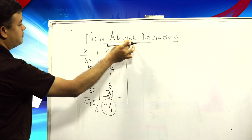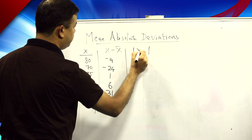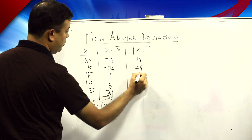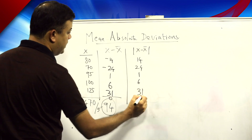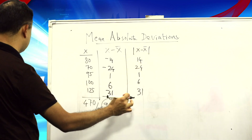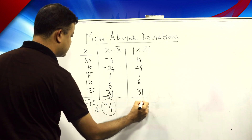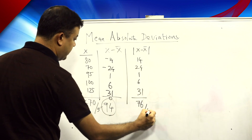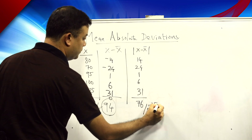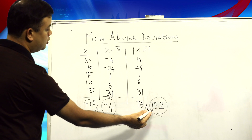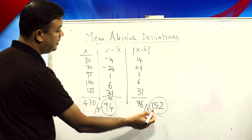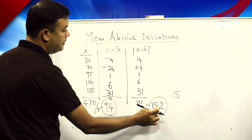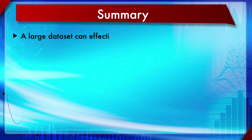Taking the absolute values of the deviations gives: 14, 24, 1, 6, and 31. Summing these absolute values gives 76. Dividing by 5 (the number of elements) gives 76 ÷ 5 = 15.2. So the mean absolute deviation is 15.2. Recall that the median absolute deviation was 15, so both measures are quite similar for this data set, with mean absolute deviation being slightly higher.